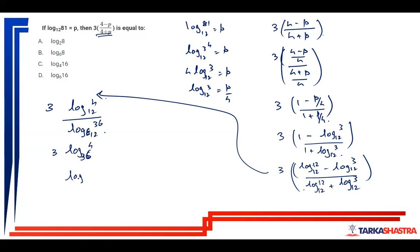So this is log 4 cube which is 64 to the base 36. So which is nothing but log 8 square by 6 square which is log 8 to the base 6. Option B is your answer.